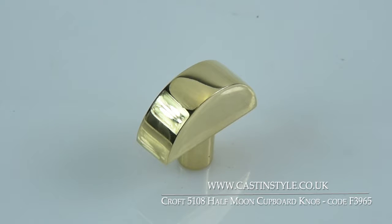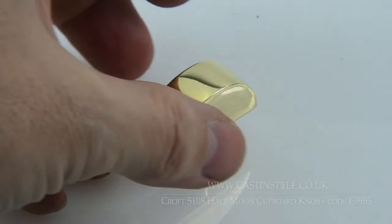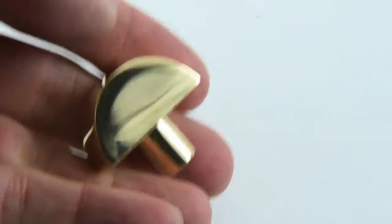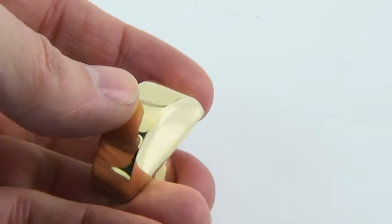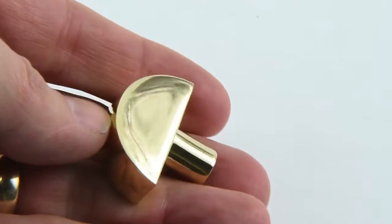This is the F3965 Half Moon Cupboard knob made by Croft. It's a really delicate beautiful little knob made from solid brass in this case, but they can make these knobs